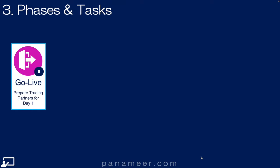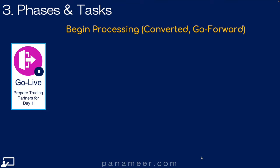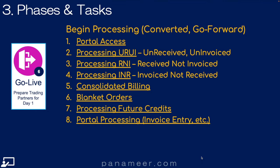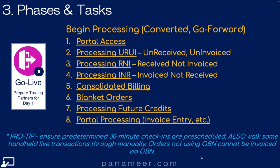Step 6: The Go Live step. The goal is to ensure all players understand the different transaction states and how to process each one. For example, if you convert a purchase order, you can't receive an invoice back through OBN — so how are you going to manage that? Here are the major tasks. Pro tip: ensure predetermined 30-minute check-ins are pre-scheduled prior to Go Live — in fact, schedule them for 15 to 90 days prior, and extend them so you can walk transactions through manually. Remember, orders not using OBN cannot be invoiced via OBN.